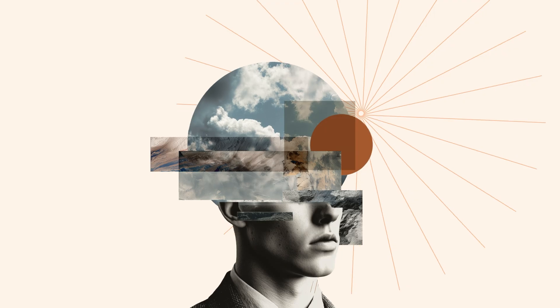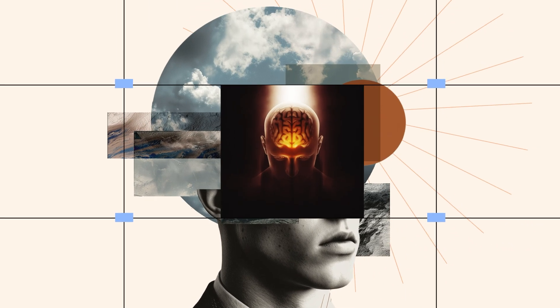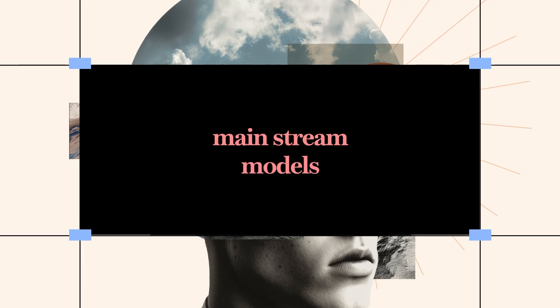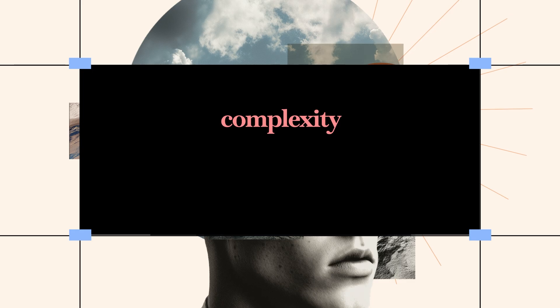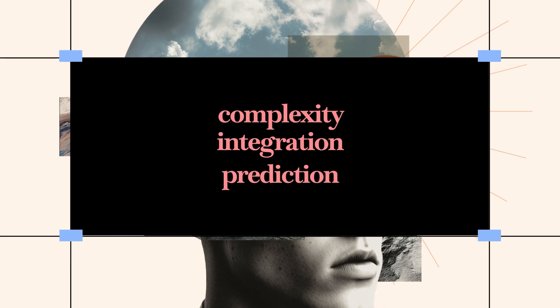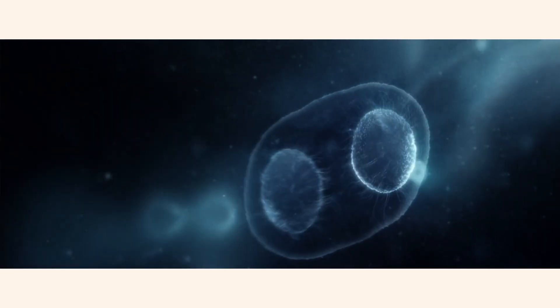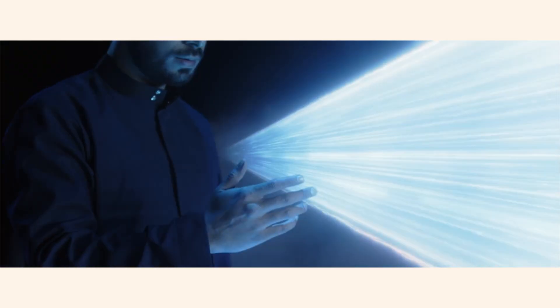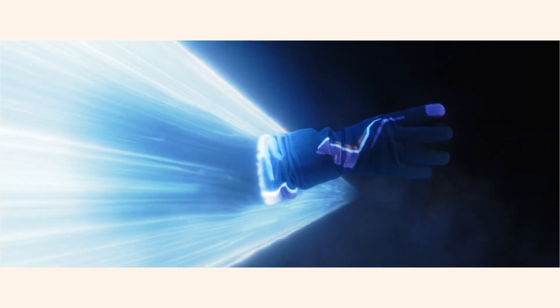So where does all this leave us? On one side, you've got the mainstream models. Consciousness tracks with complexity, integration and prediction. On the other, you've got radical takes, like Faggin's, saying consciousness is fundamental, something fields of matter already carry.